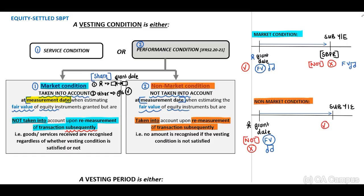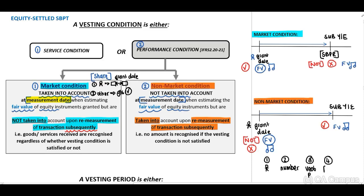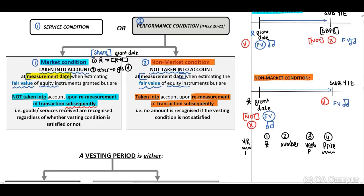When applying this in your table, include: number of employees, number of shares or options, vesting period, and the fair value price to use. For each year listed in your table, you need to include the correct price to use to calculate your share-based payment reserve, depending on whether you have a market or non-market condition.